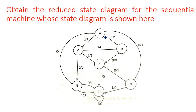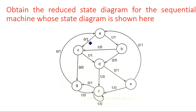State A goes to B — A moves to the next state when input is equal to 1, and at that time output is equal to 1. When input is equal to 0, it goes to state C and then output is equal to 1.